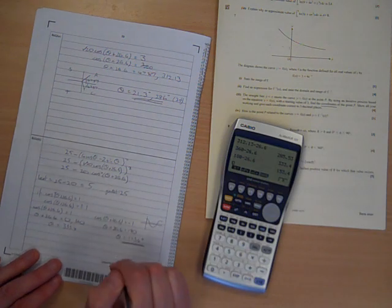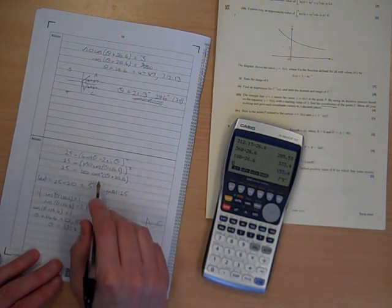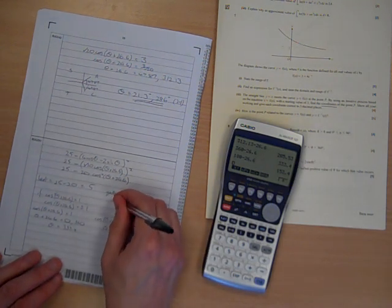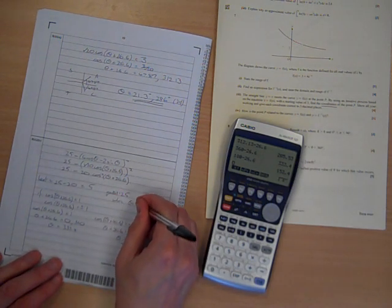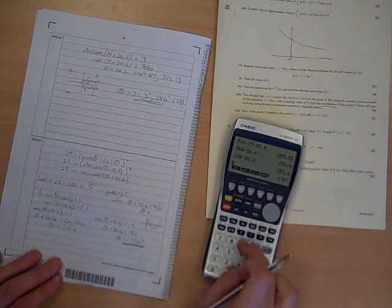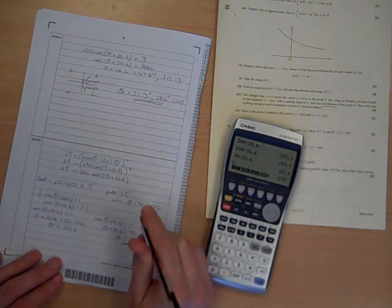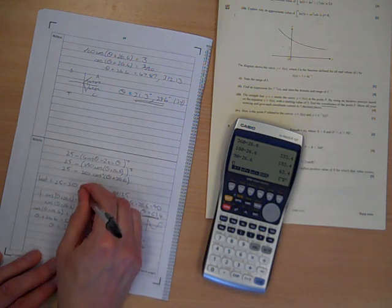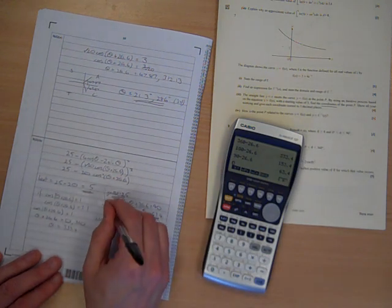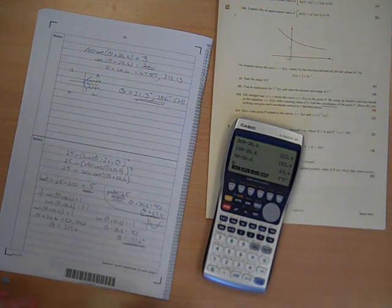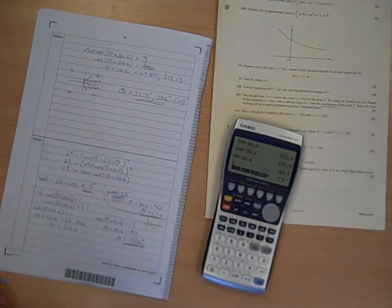The greatest, well, this one is much easier. That's when this lot is equal to 0. And this would happen when theta plus 26.6 equals 90. That one's much easier. So theta is 90 minus 26.6 is 63.4. That's the greatest. That's the least. And I've kind of, my working out isn't the neatest there. But you get the idea of the flow of what we've done. There we go. And that's maths.